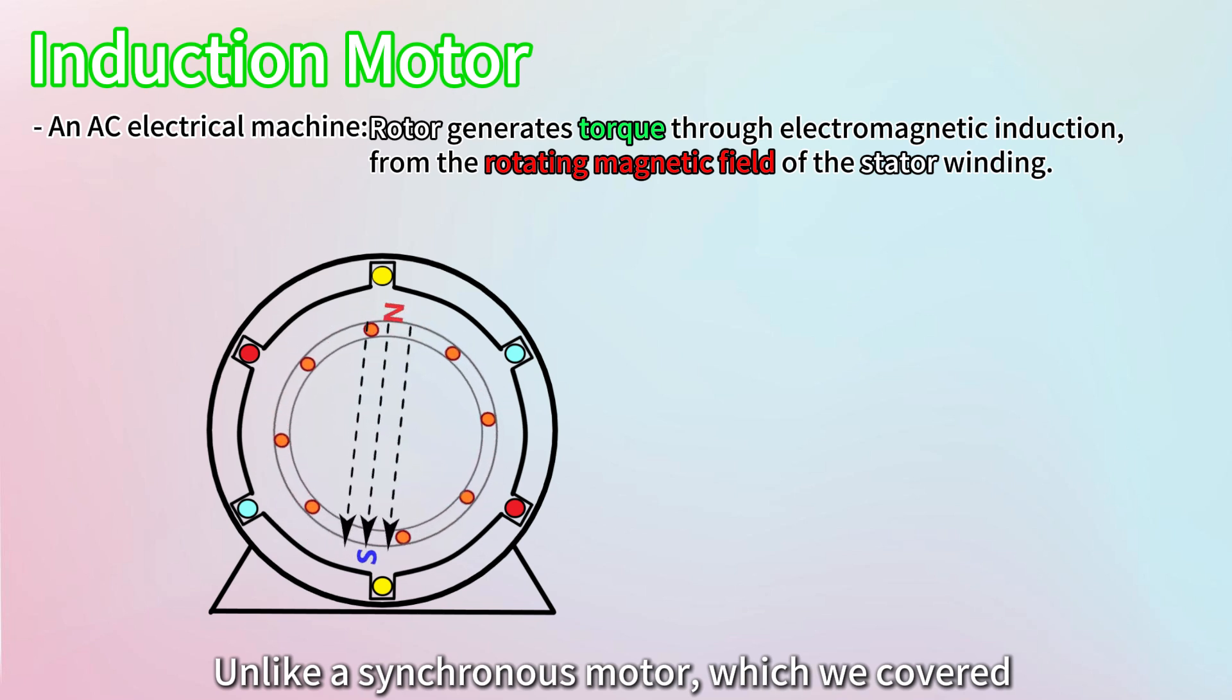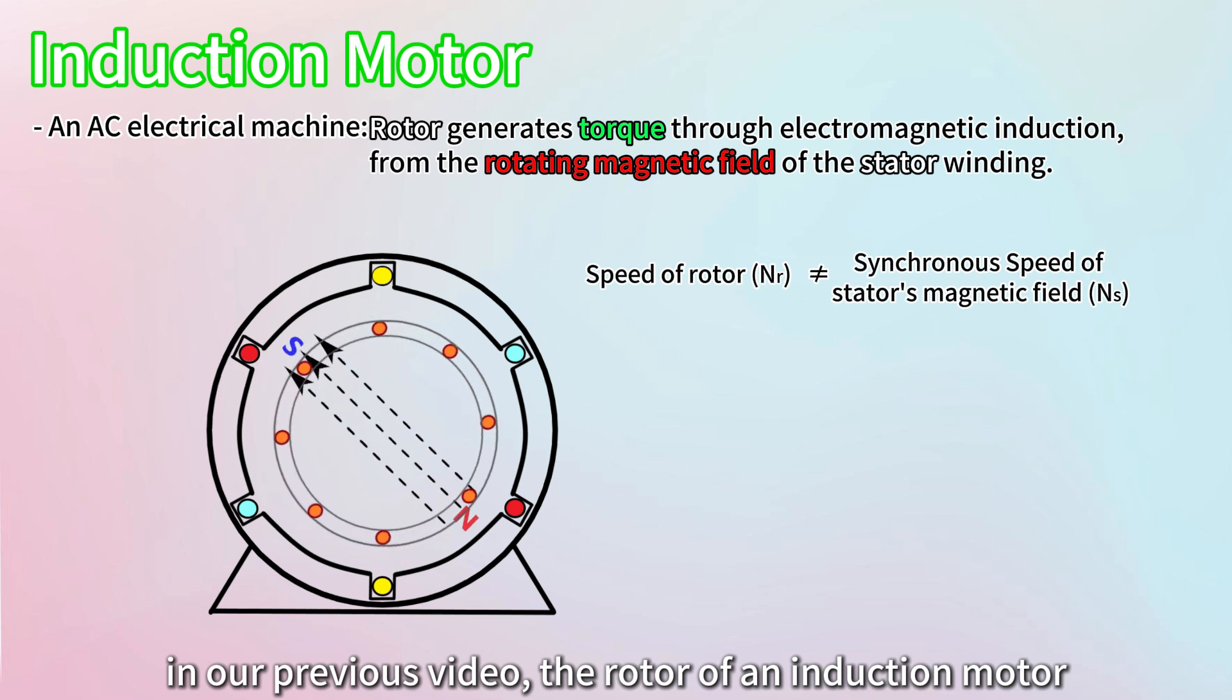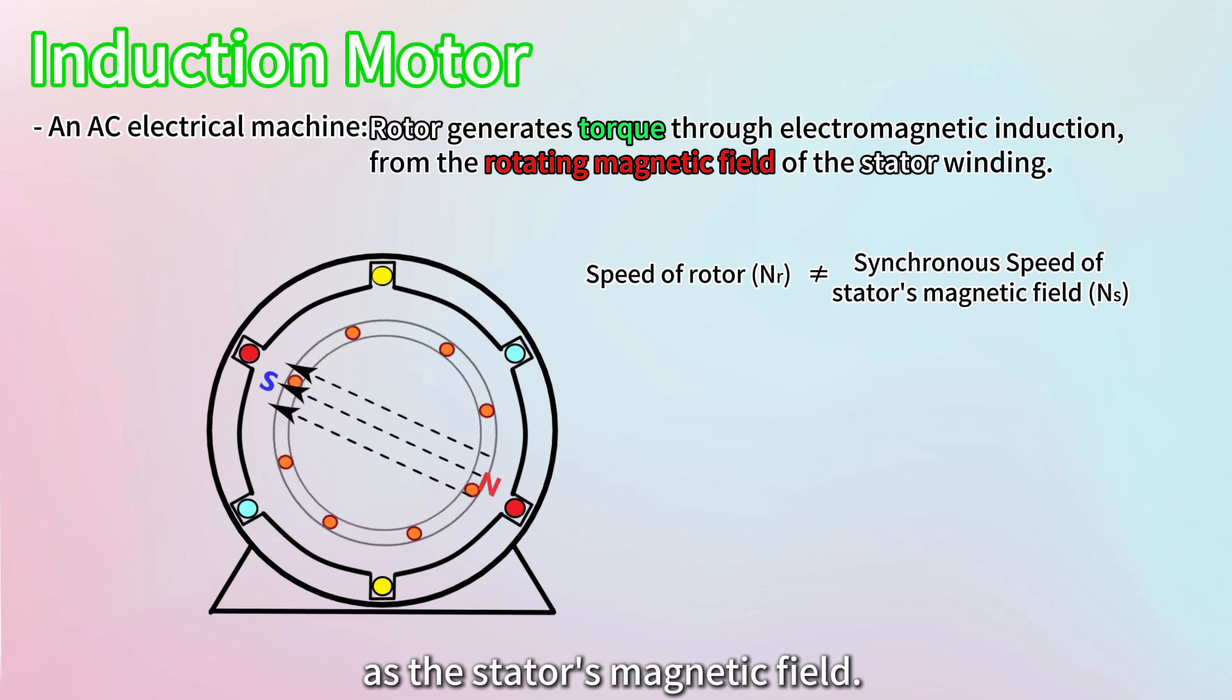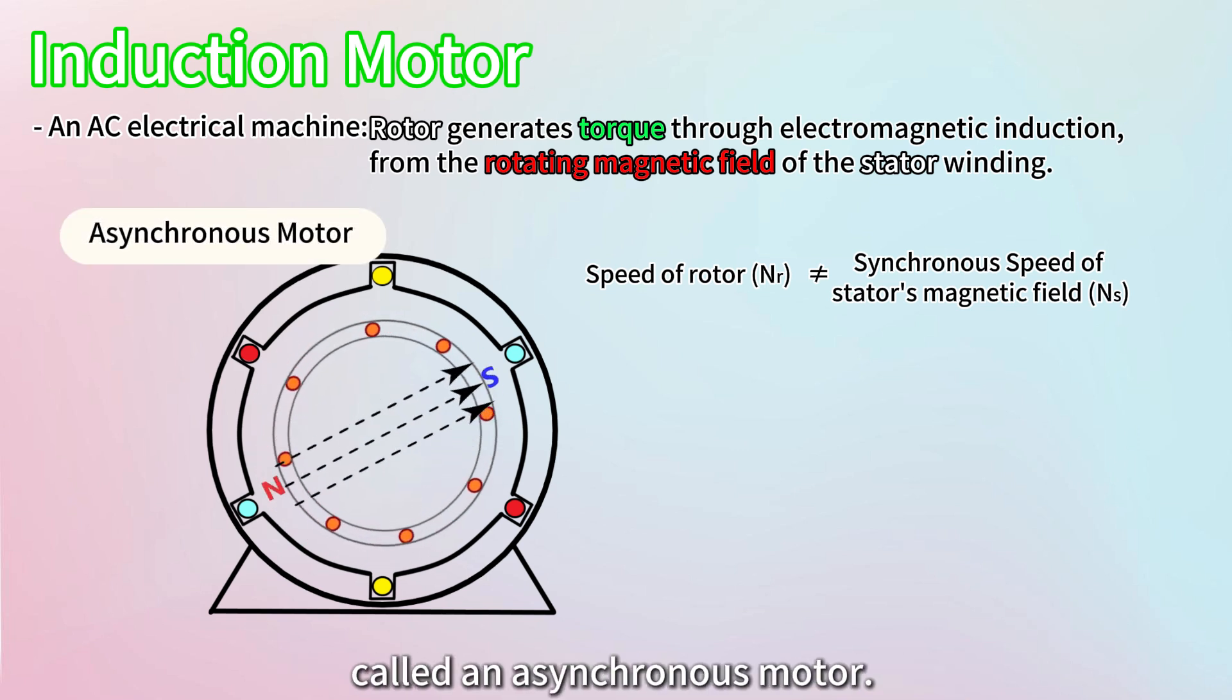Unlike a synchronous motor, which we covered in a previous video, the rotor of an induction motor doesn't rotate at exactly the same speed as the stator's magnetic field. This slight difference in speed is why it's called an asynchronous motor.